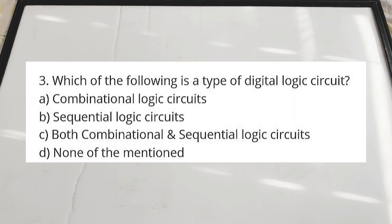The third question: which of the following is a type of digital logic circuit? Option A: combinational logic circuit. Option B: sequential logic circuit. Option C: both combinational and sequential. Option D: none of these. Let us explain what a combinational logic circuit and a sequential one are.